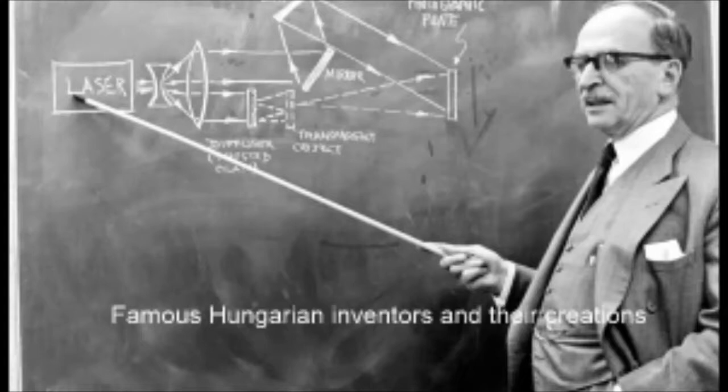The new tip consisted of a ball that was free to turn in a socket and pick up ink from the cartridge, and then roll to place it on the paper. The first ballpoint pen was presented at the Budapest International Fair in 1931.